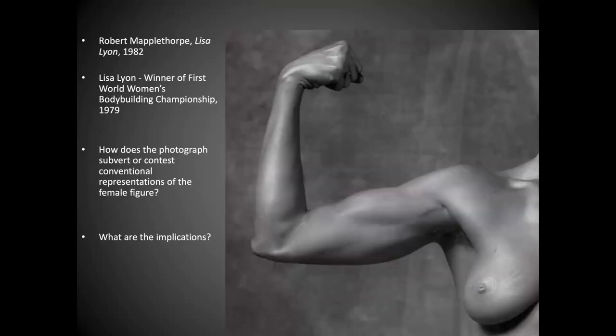Mapplethorpe did a lot of interesting things with his photographs. This one is Lisa Lyon from 1982 — she was the winner of the first women's bodybuilding championship in 1979. In women's bodybuilding nowadays there are divisions: some where women try to get as big as possible, and others called figure competitions where women look more like Lisa Lyon.